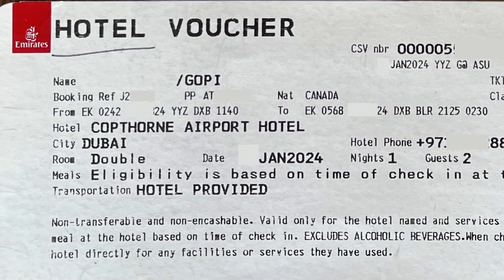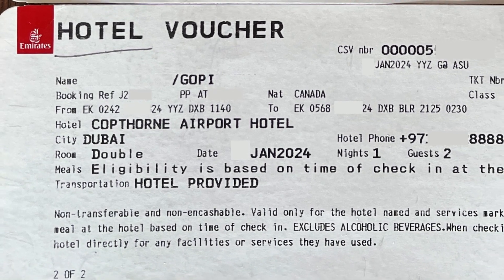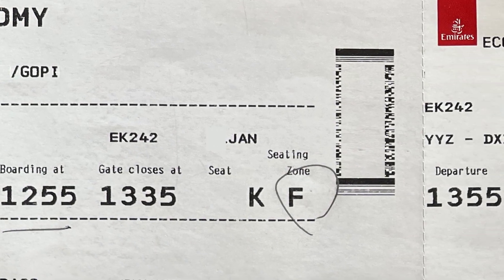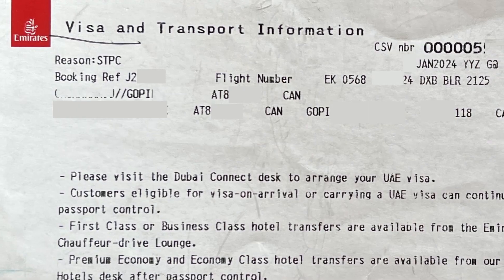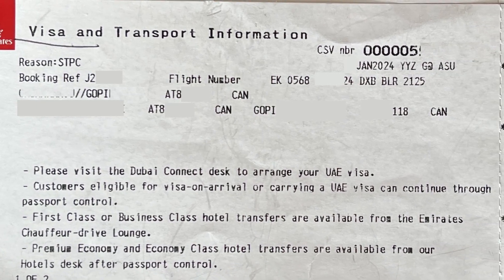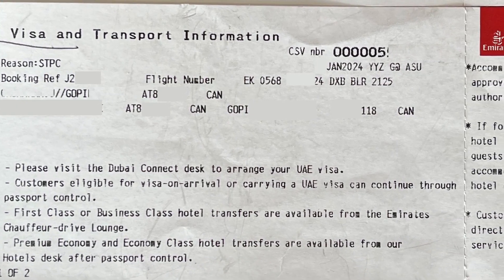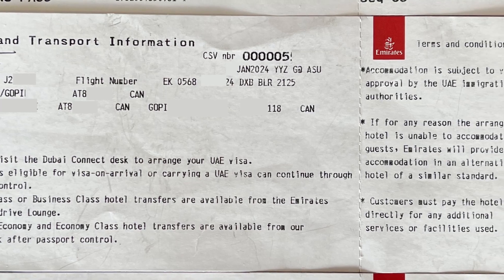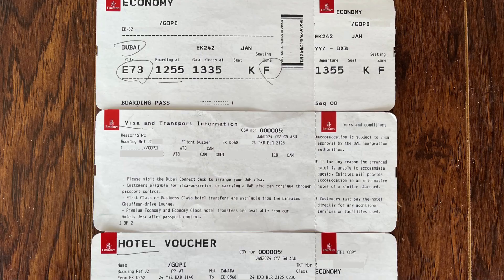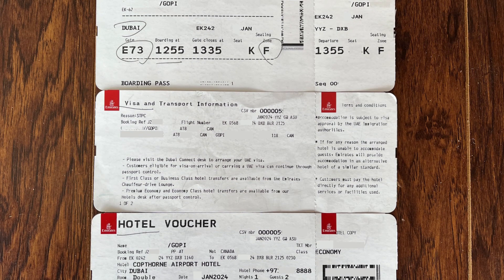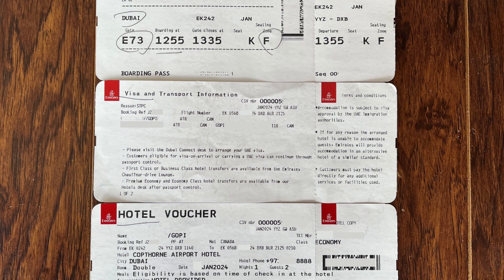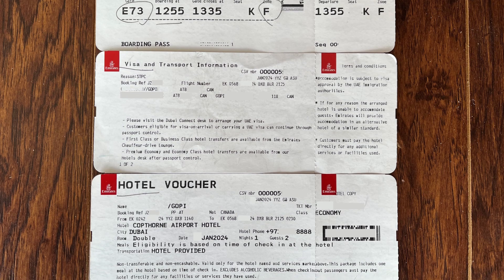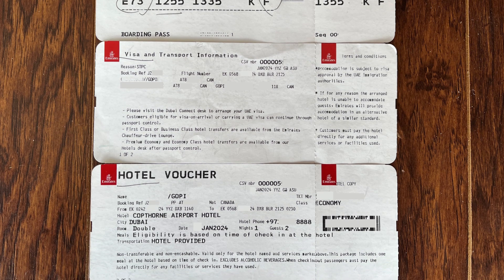Here is the free hotel voucher which was given for stay in Dubai, and you also have the ticket, visa, and transport information. These were the documents provided when I boarded from Toronto for Dubai. This is what you will get if you are getting access to Dubai Connect, and this can be easily found on the Emirates website and also on your ticket.